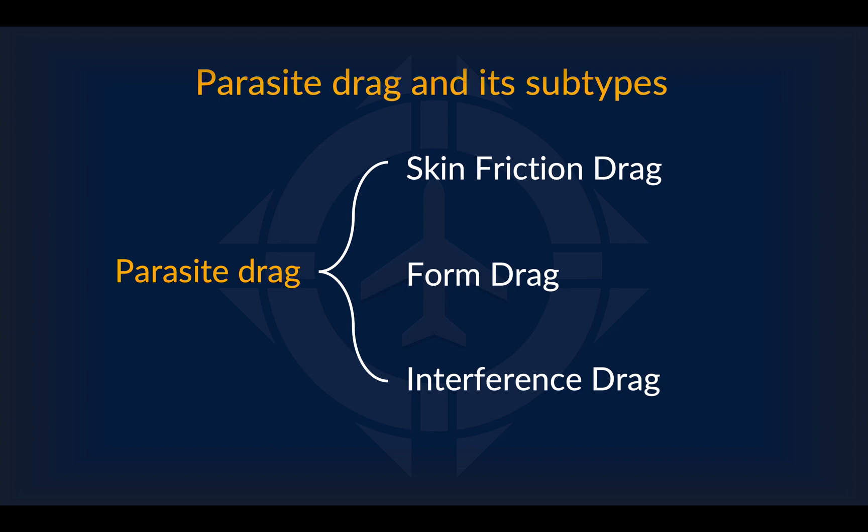Parasite drag has three subtypes, as shown here. They are, in no particular order, skin friction drag, form drag, and interference drag. Though they are different, they each share the common characteristic that they increase as the airplane speeds up and are caused by air resistance. We will be looking at each of these subtypes in the next slides.